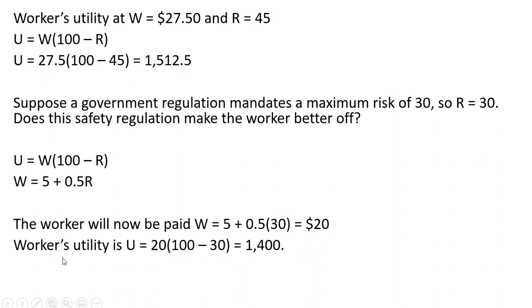If we evaluate the worker's utility function when W equals 20 and R equals 30, we get a total utility of $1,400. So you'll notice that this mandate that does make the workplace safer will make some workers worse off—those workers that prefer to take on more risk to earn those higher wages. In this case, this worker's made worse off.